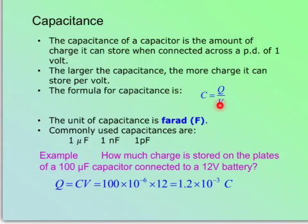And the unit of capacitance is farad, capital F. And it's a big unit. That's why the commonly used capacitances are micro farad, micro is one millionth. Nano, even smaller. Pico, even smaller.